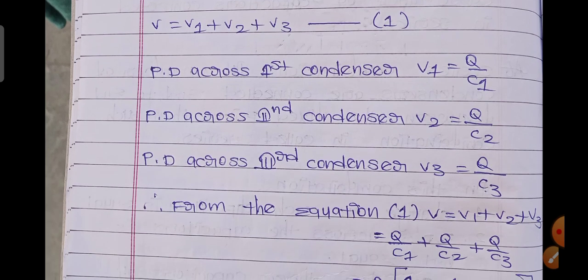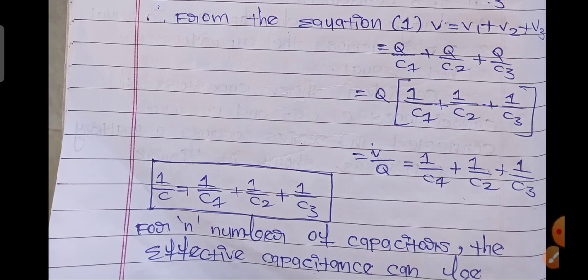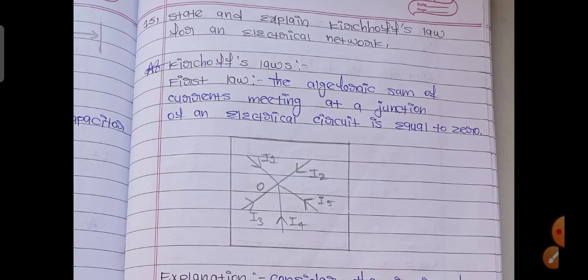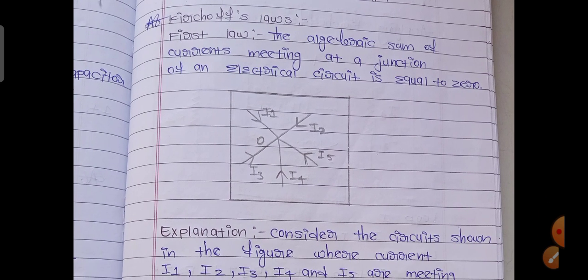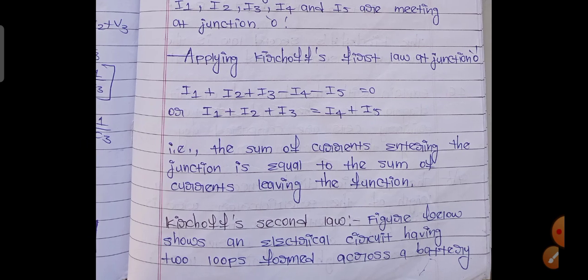These answers are very lengthy but don't be afraid. 15th: state and explain Kirchhoff's law for an electrical network. For general group students it may be an eight-mark question, but you are bridge course inter-vocational students — according to four marks only you can write the answer. At least try to draw the diagrams. First law, second law — explanation.